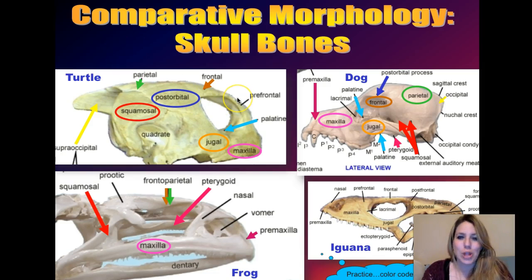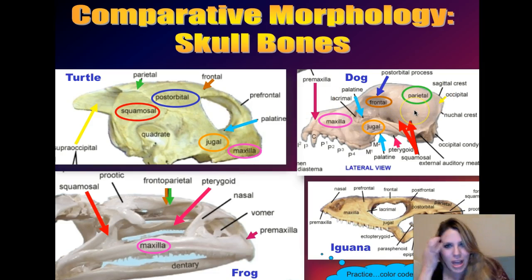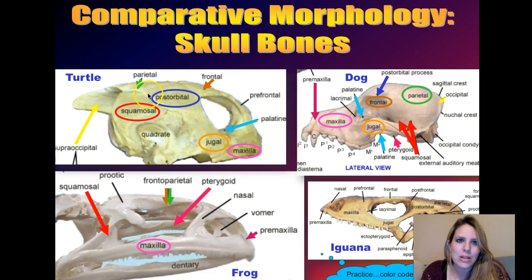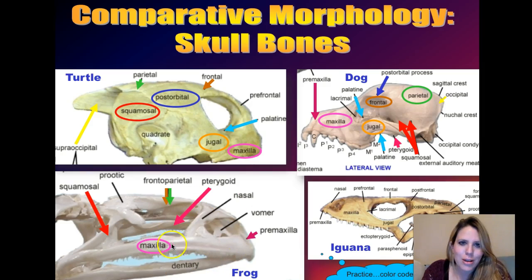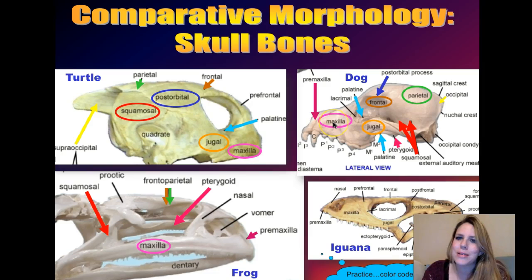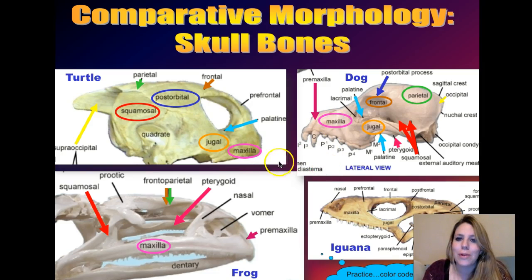Here's a larger view. Here's a turtle and here's a dog, and again you can see the parietal bone of the dog and the parietal bone of the turtle. You can look at the maxilla of a frog, the maxilla of a turtle, the maxilla of a dog, our maxilla, and an iguana's as well.